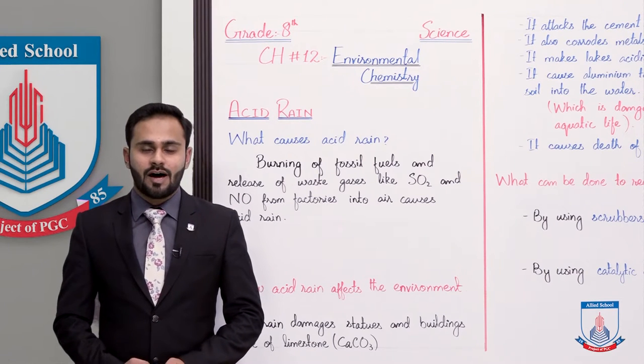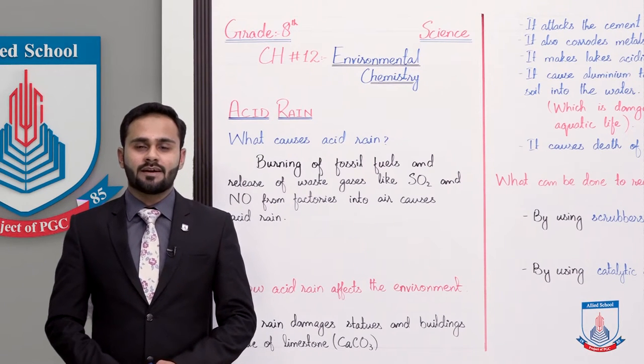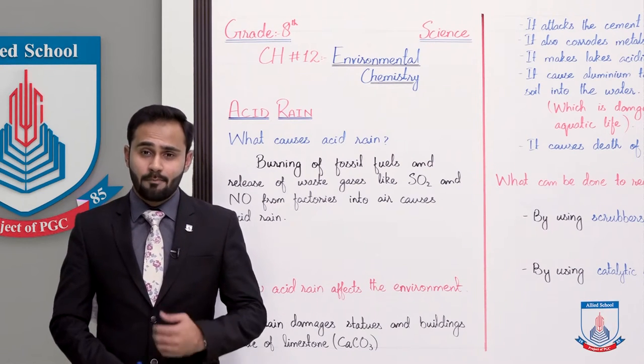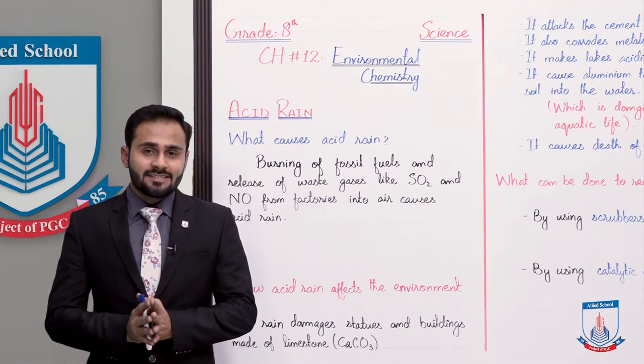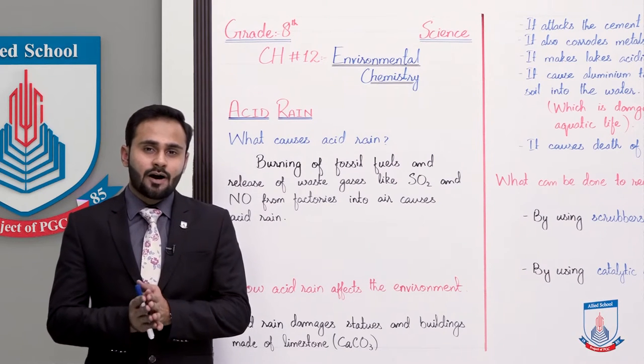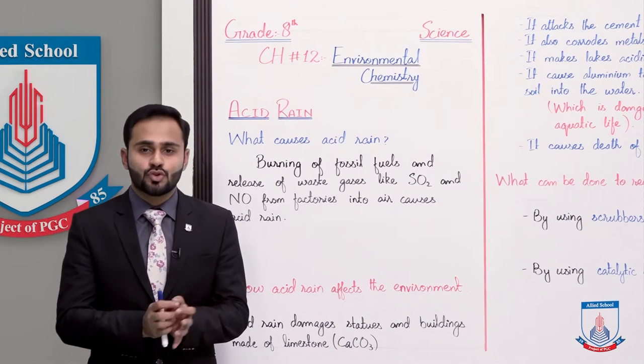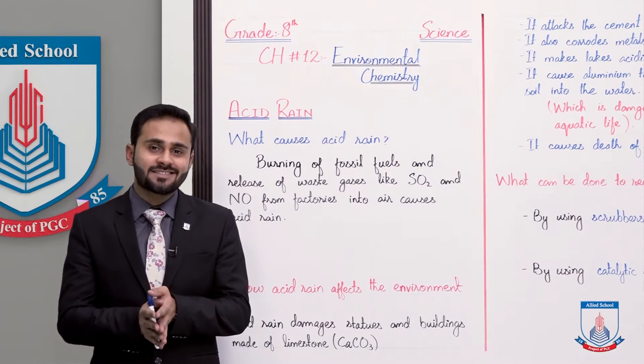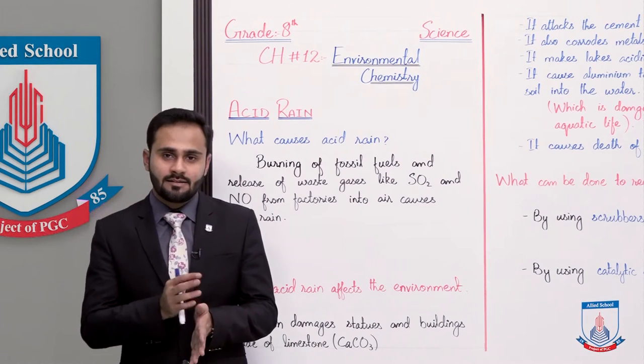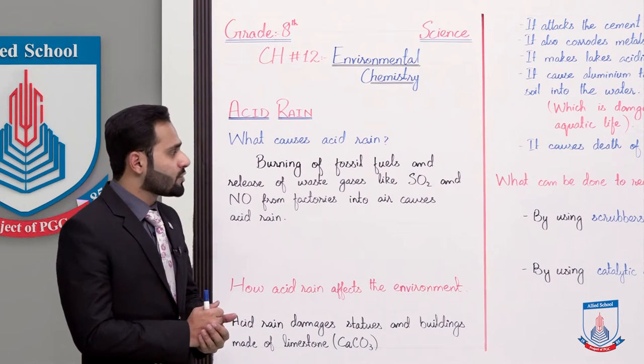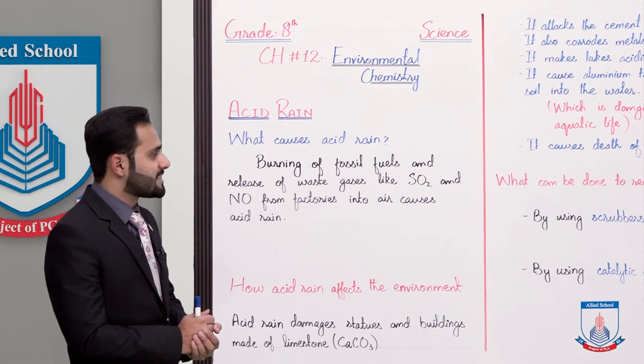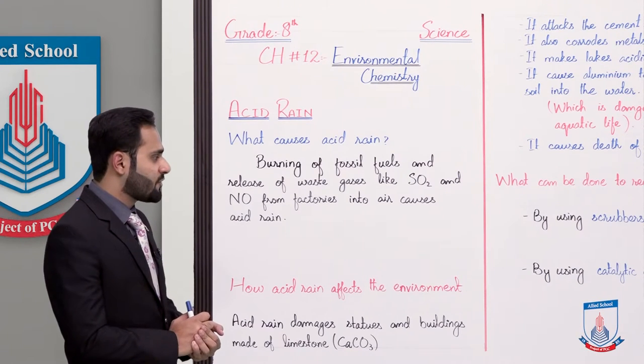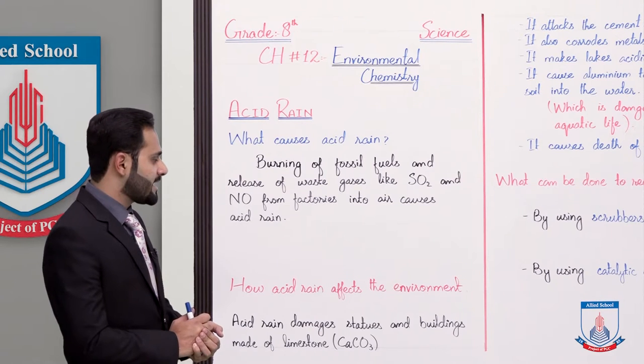Chapter number 12, environmental chemistry, and the topic is acid rain. What is acid rain and why does it occur? Acid rain, as you can tell from the name, is rain that contains acid. Now why does acid rain occur? That is burning of fossil fuels and release of waste gases like sulphur dioxide and nitrogen oxide from factories into air causes acid rain.